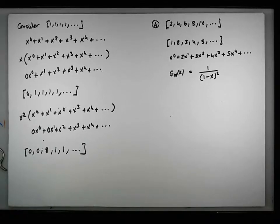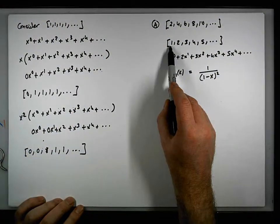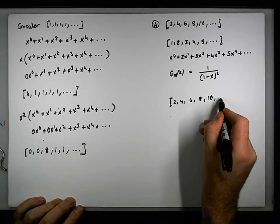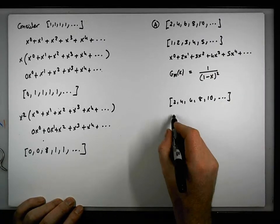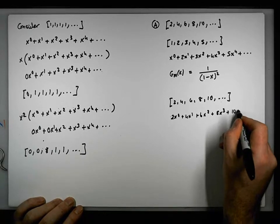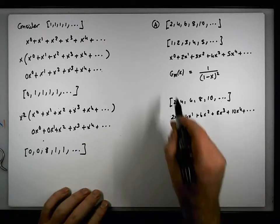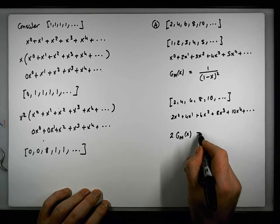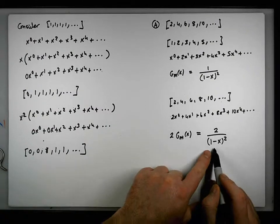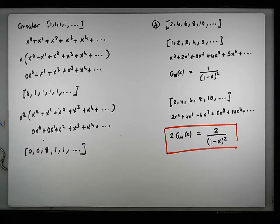We want the even naturals, which are just twice the naturals. Twice the power series gives us two x to the zero plus four x to the one plus six x squared plus eight x cubed plus ten x to the four, encoding the sequence 2, 4, 6, 8, 10. So we calculate twice g of x, which gives us two over one minus x squared. That is the generating function for the even naturals.